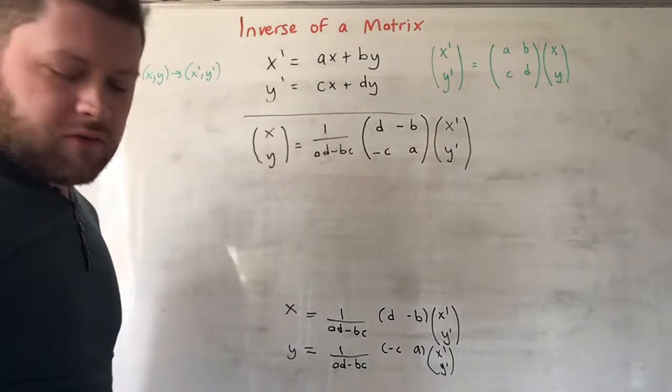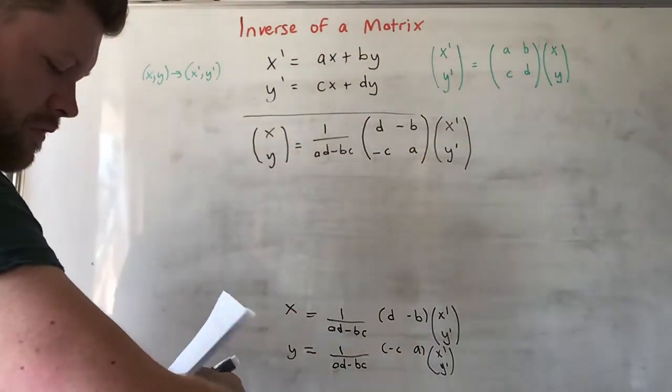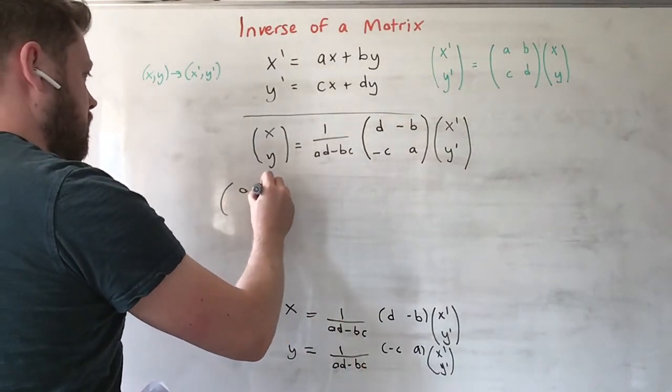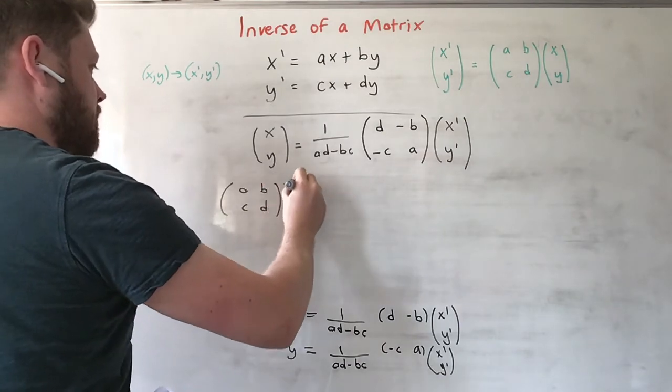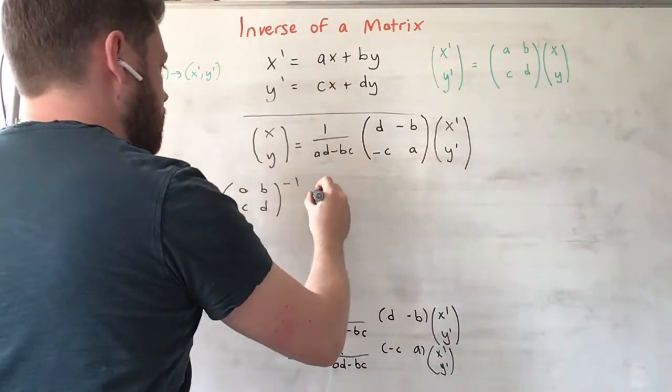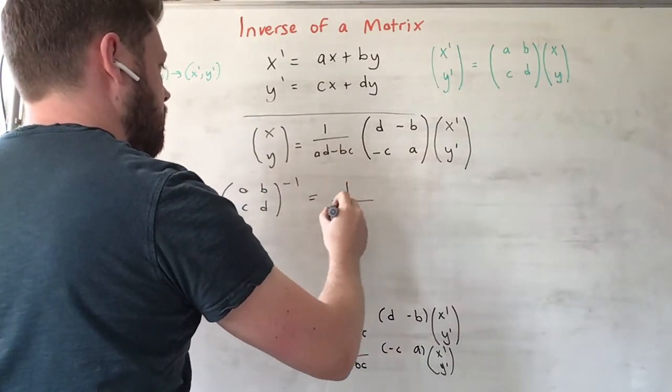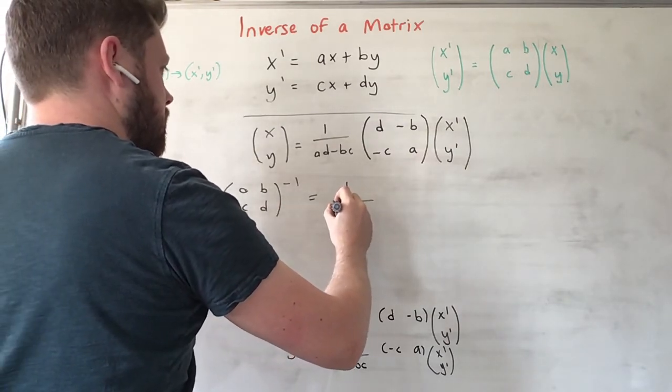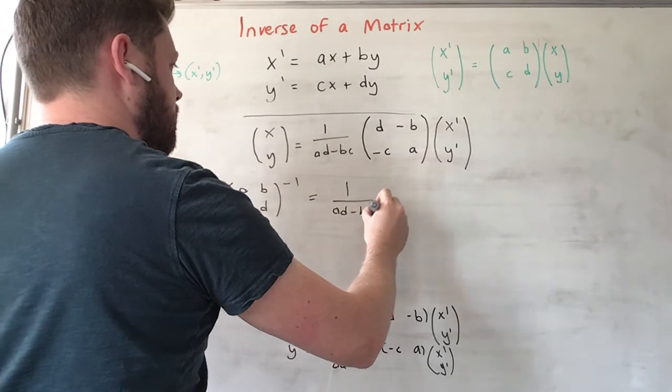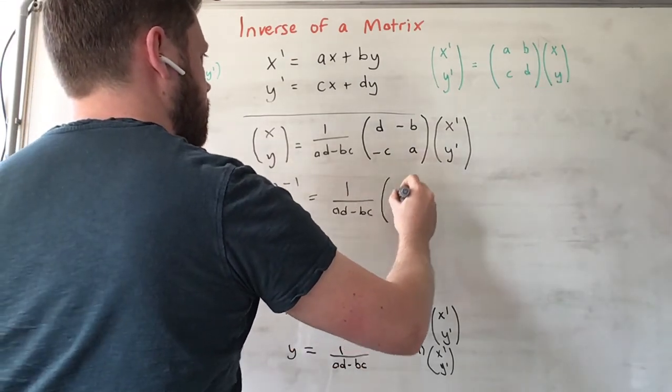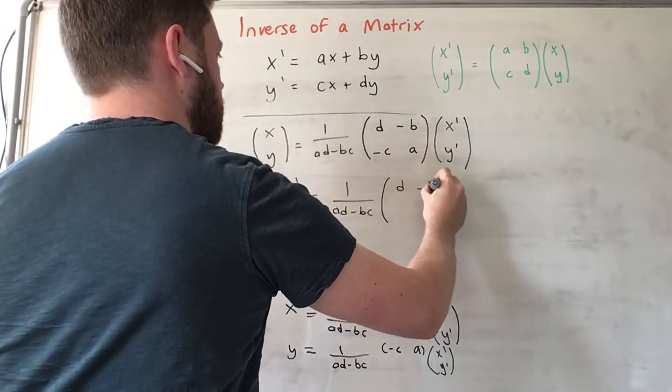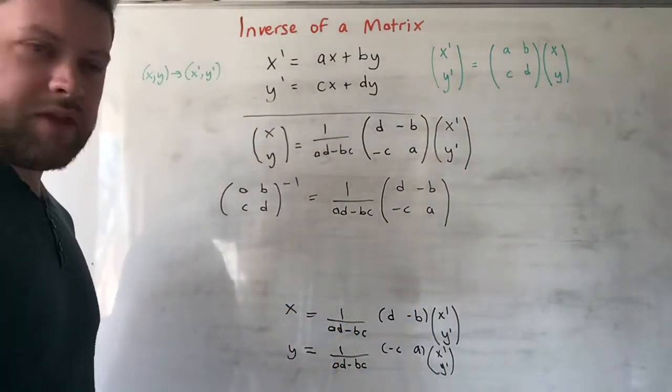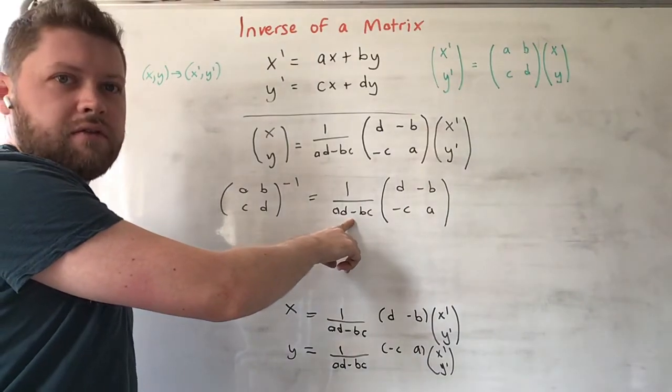So we can say that the inverse of (a, b; c, d) is equal to 1 over (ad - bc) times (d, -b; -c, a).